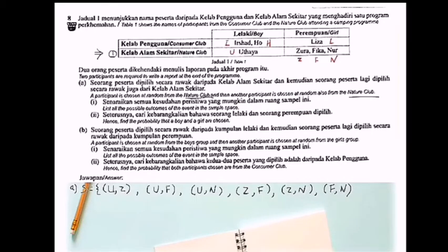If I write Utaya and Zura, can I write Zura and Utaya? Do I need to repeat or not? When I write U-Z, U-F, U-N, Z-F, Z-N, and F-N, can I write again Z-U, F-U, N-U, F-Z, N-Z, and N-F? Actually no need, because I just choose to write a report.